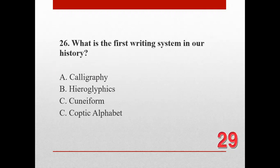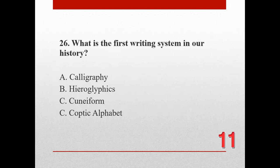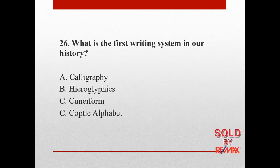Number twenty-six. What is the first writing system in art history? A. Calligraphy, B. Hieroglyphics, C. Cuneiform, and D. Coptic alphabet. The correct answer is B. Hieroglyphics.